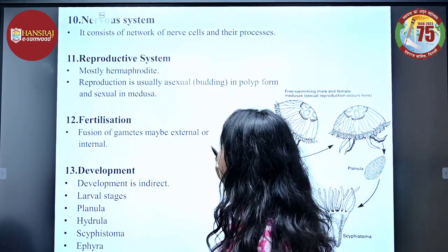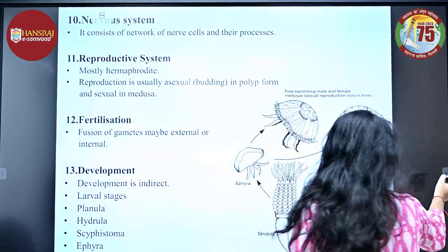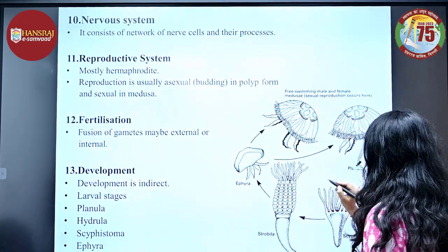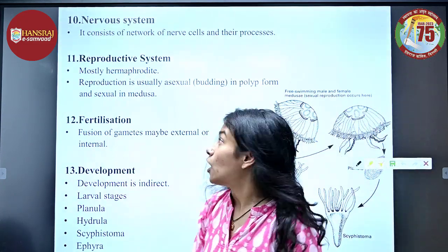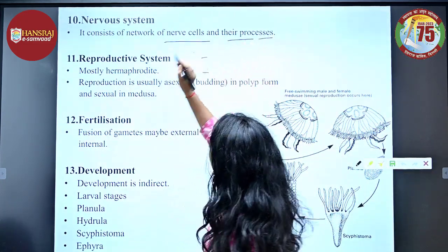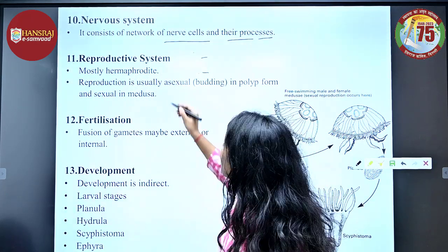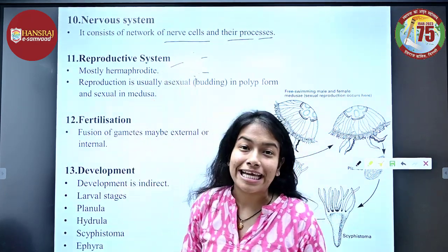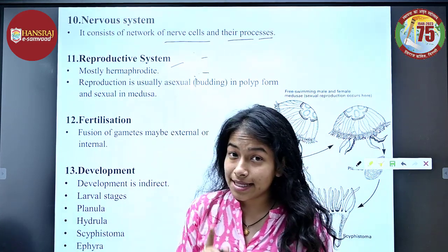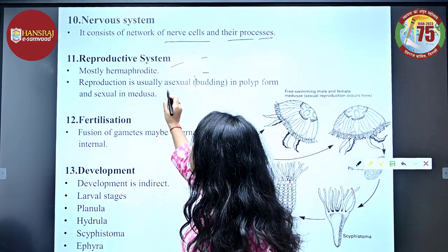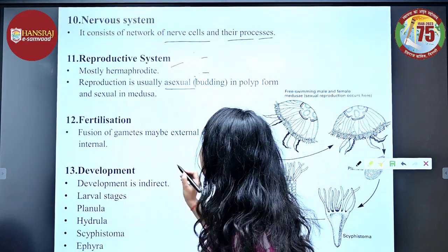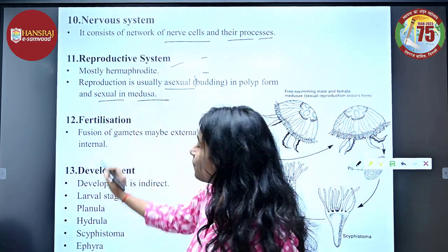The nervous system consists of a network of nerve cells and their processes. Regarding the reproductive system, cnidarians are mostly hermaphrodite in nature. Reproduction is usually asexual in the polyp form and sexual in the medusa form.